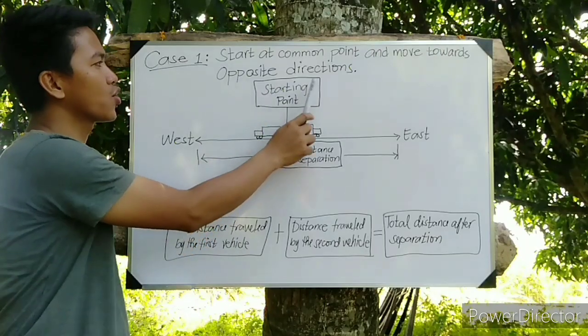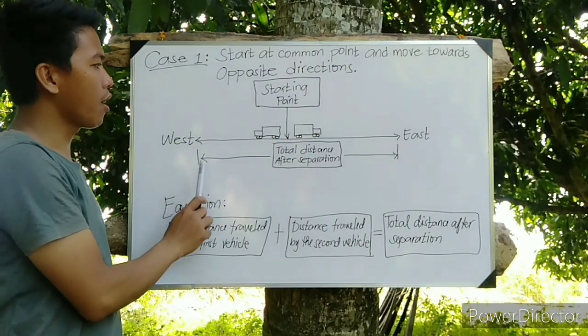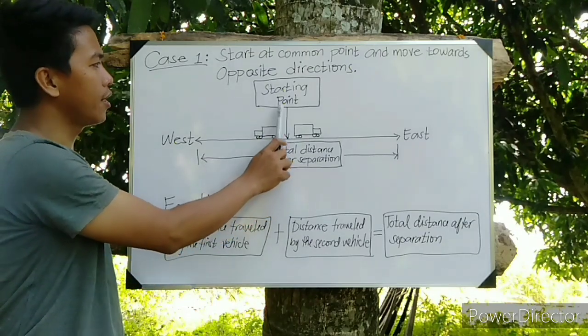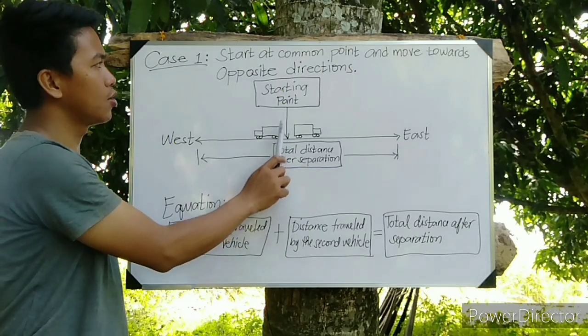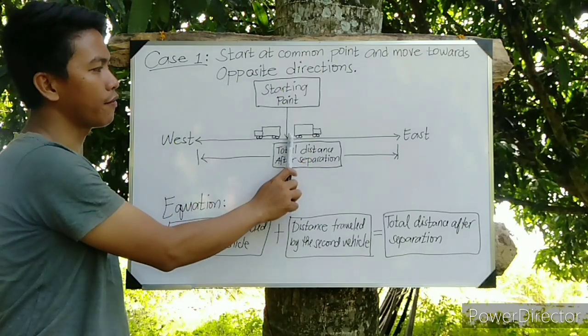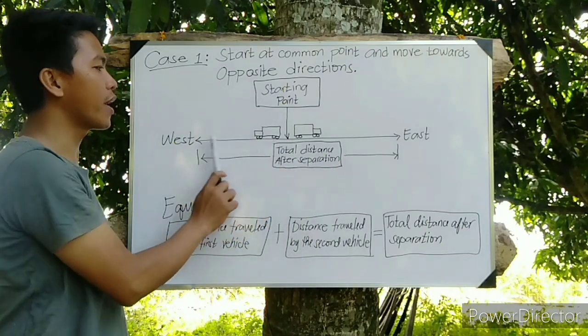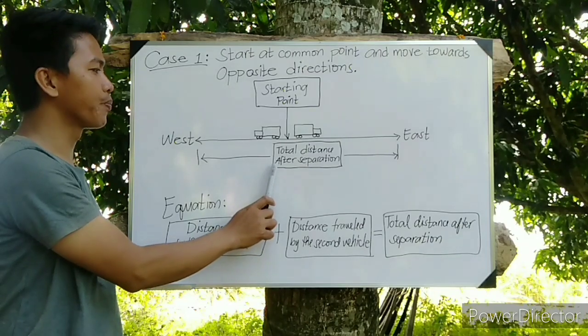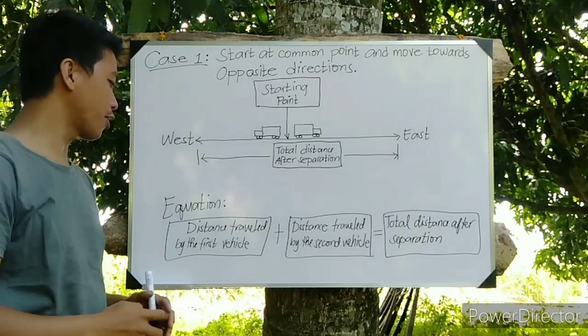So I have here the sketch where there are two cars and they started at a common point going to opposite directions. We have here the first car going to the east and the second car going to the west. We have here also in the bottom the total distance after separation.